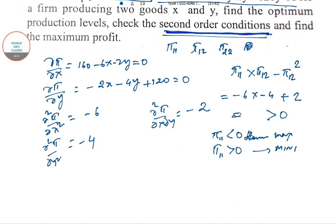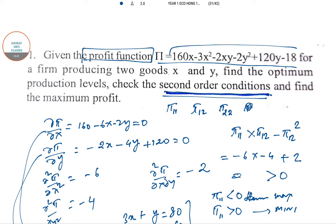All we have to solve the values now. So this is the first order condition: we can take 2 common, so 3x + y = 80 and x + 2y = 60. All you need to do is solve x and y and put this into the main equation in order to find the maximum value of profit. I hope you can do till this part. So now I'm proceeding to the next question.